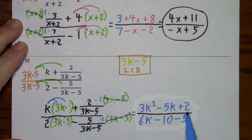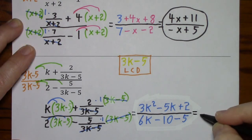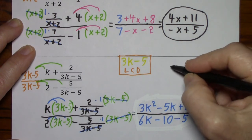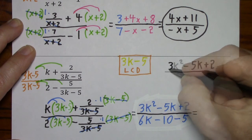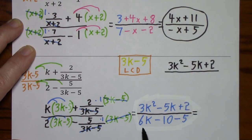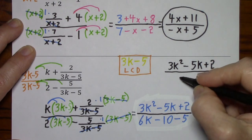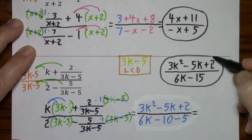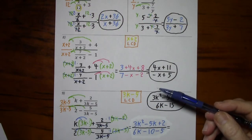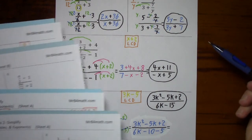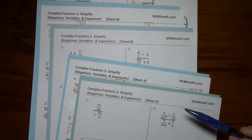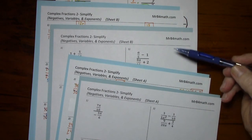The numerator we can't simplify, but the denominator has two like terms. So our final answer — the numerator will be the same, and the denominator will be 6k minus 15. So this is our simplified answer. If you would like some practice with these concepts, as long as you're at my website, I have two worksheets, each with a detailed answer key.